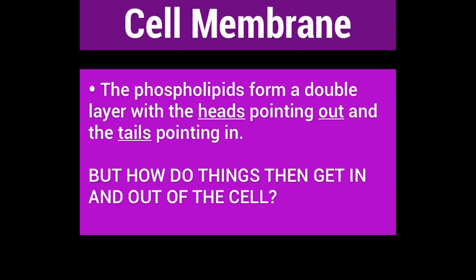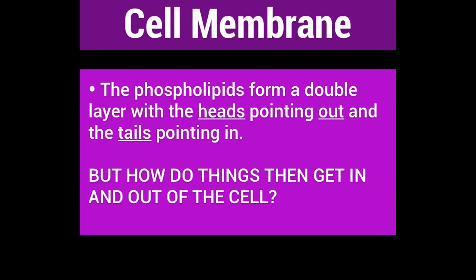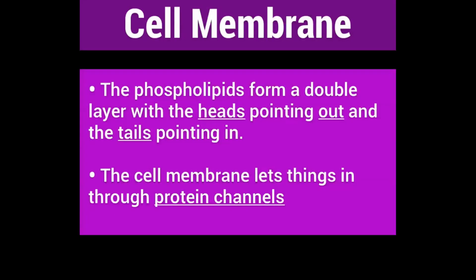But how then do things get in and out of the cell? Well, that's a good question. This little green thing here represents a protein, and it's like a channel between the water on the outside of the cell and the cytoplasm on the inside of the cell. The cell membrane lets things in through the protein channel.